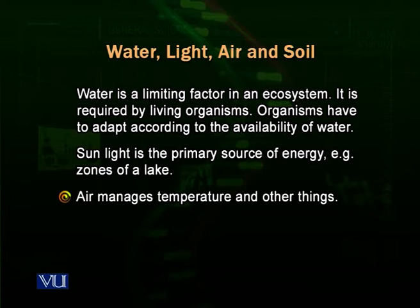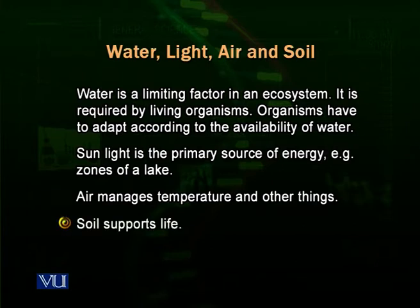Air is also a very important factor because air manages the temperature of the environment, and air currents are responsible for different processes of life — for example, distribution of spores of a plant depends on air currents. Then soil — soil is a very important abiotic factor because it supports plant life and animal life. Plants grow in specific types of soils which have their own properties: particle size, pore sizes that accommodate water and gases, and different types of bacteria which decompose organic matter.